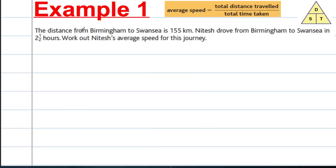Firstly, here's example one. The distance between Birmingham and Swansea is 155 kilometers, so I'm going to straight away write that D equals 155 kilometers. Nitesh drove from Birmingham to Swansea, this 155 kilometers, in two and a half hours, so time equals 2.5 hours. Work out Nitesh's average speed.